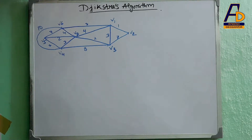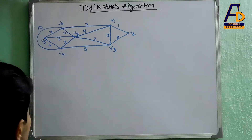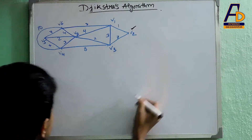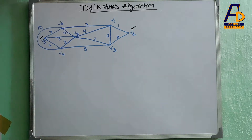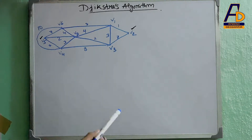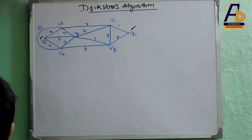First we need to consider the starting vertex and the destination vertex. Here we will consider V2 as the starting vertex and V5 as the destination vertex. We need to find the shortest path between V2 and V5, and also the length of that path.